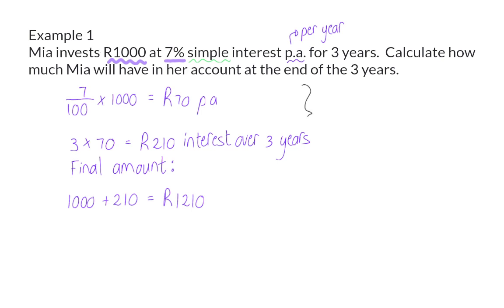You can also choose to do the first two steps in one by making use of a formula, and for that we need symbols. We took the simple interest of 7%, which we will call I, and multiplied it with the original amount, which we call P. Then we took this answer and multiplied it by the number of years, represented by the symbol N. So, to calculate the simple interest S, we multiply the original amount P by the interest rate I and then also by the number of years N.